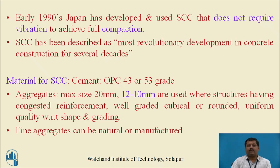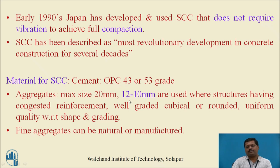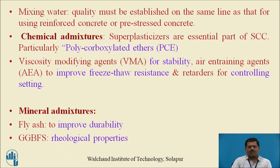What are the materials required for self-compacting concrete — are the same ingredients used, or are additions made? For cement, OPC — ordinary Portland cement — 43 or 53 grade is used. For aggregate, theoretically 20 mm maximum size is allowed, but practically 10 to 12 mm aggregates are required. Regarding water, the same quality assured for regular concrete can be considered for self-compacting concrete.